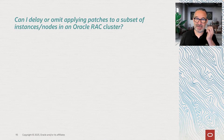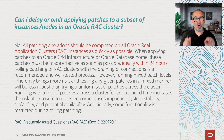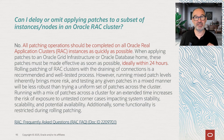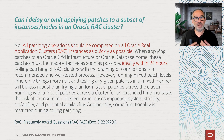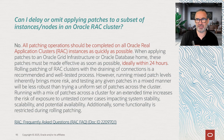The question is: can I delay patching or omit patching to a subset of instances or nodes? Even though it's technically possible, we say don't. All patching operations should be completed on a RAC application cluster environment as quickly as possible. You should not delay that, you should not have these mixed combinations. When applying patches to a GI environment or a database home, these patches must be made effective as soon as possible. Go node by node, straight forward, like crossing the street.